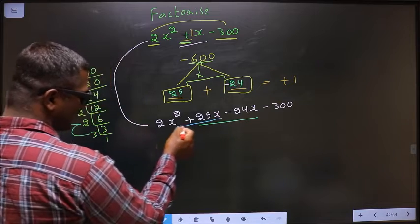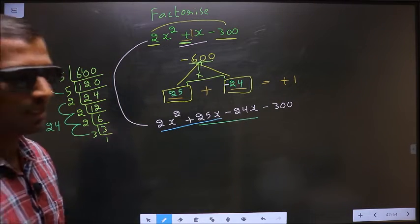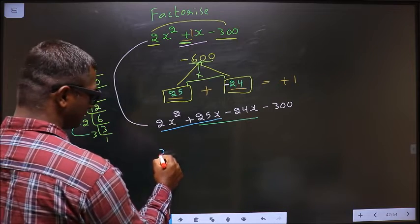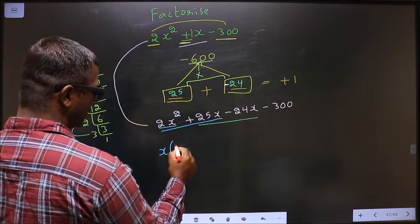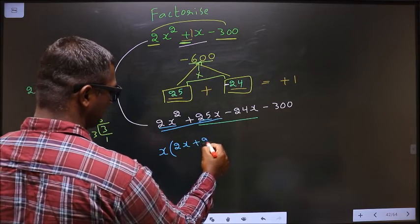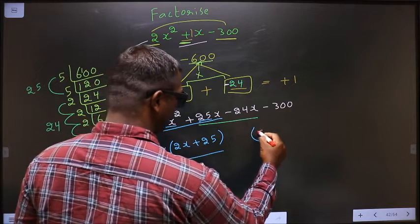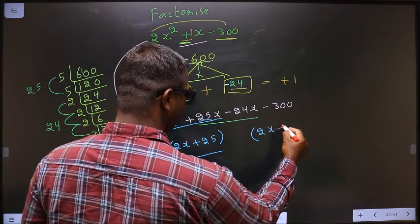Now, from the first two terms, take out x as common: x(2x + 25).